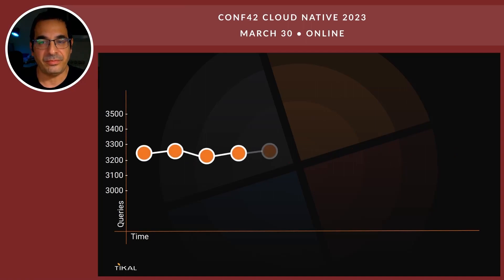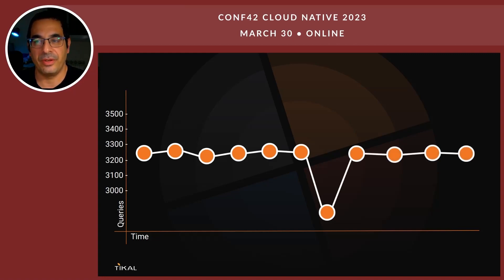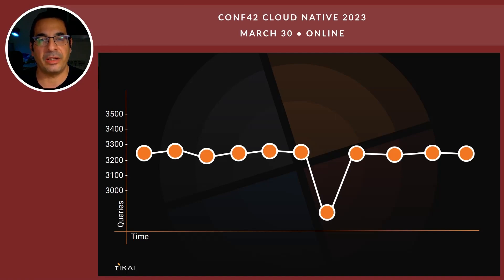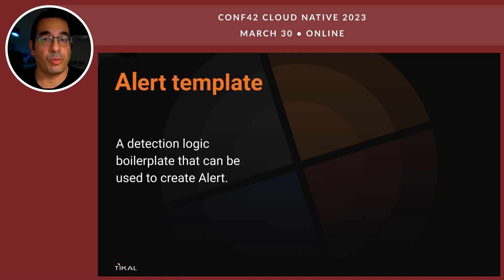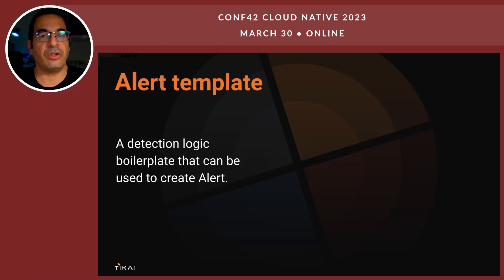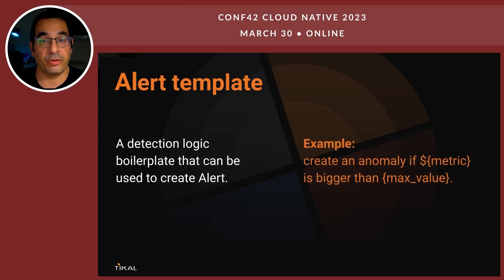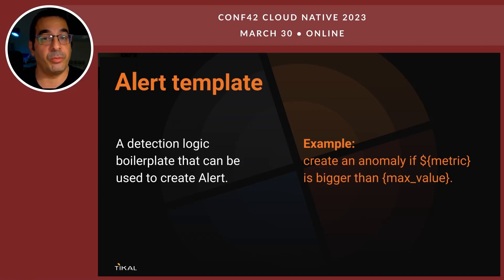The problem we are trying to solve is: what happens if at a certain point there is a sudden degradation of performance and we do not know about it in real time? The way ThirdEye works is by using an alerting template. The alerting template is the detection logic or boilerplate that can be used to create an alert — for example, create an anomaly if a certain metric is bigger than a certain maximum value.